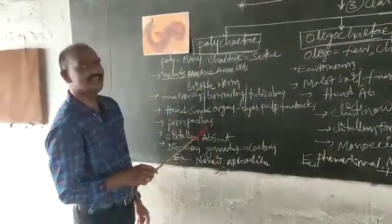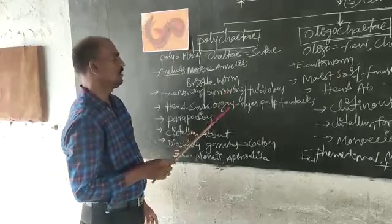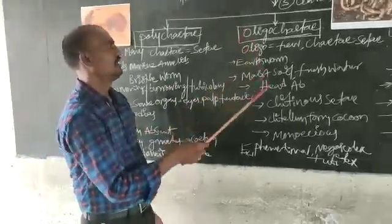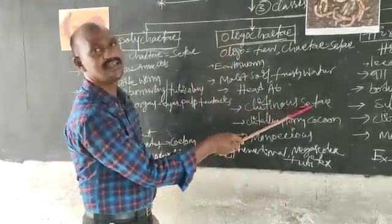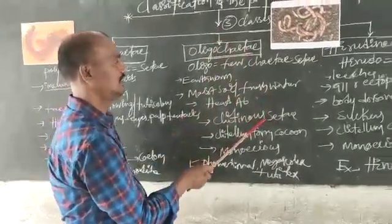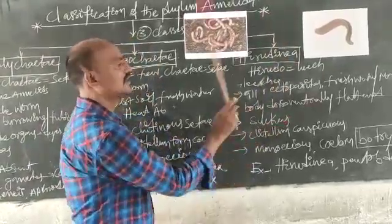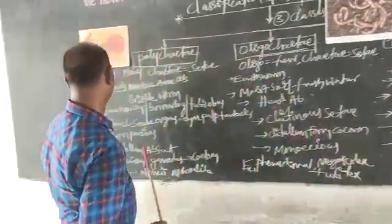Here, parapodia are there. These parapodia are helping in locomotion. Here, chitinous setae are there. These chitinous setae are helping in locomotion. Here, in the leeches, suckers are there. These suckers are helping in locomotion.